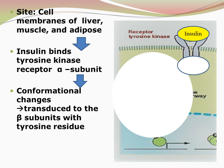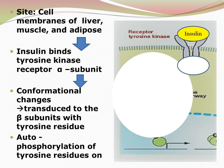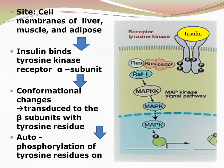We call it a tyrosine kinase receptor because kinase is the name of an enzyme that does phosphorylation. This receptor has the property of phosphorylation — specifically, it brings about autophosphorylation of all the tyrosine residues present on the beta subunit. Because of this, a cascade of signal transduction takes place.